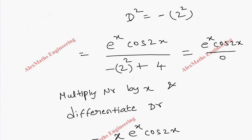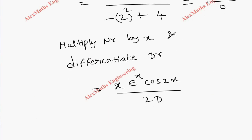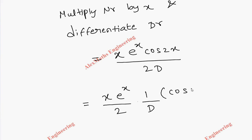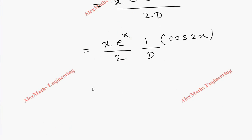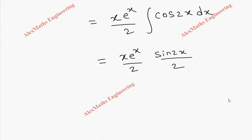Differentiation of the denominator gives 2D. Since D is in the denominator, it stands for integration, meaning 1/D represents integration. So we rewrite this as x·e^x divided by 2, times (1/D) of cos(2x). We integrate cos(2x) dx, which gives sin(2x)/2.